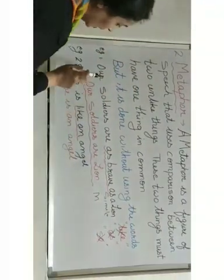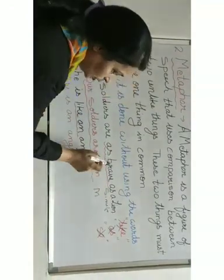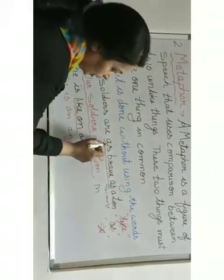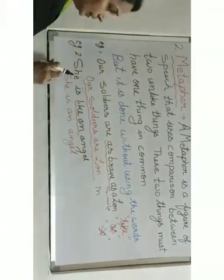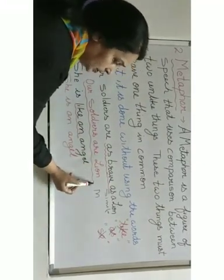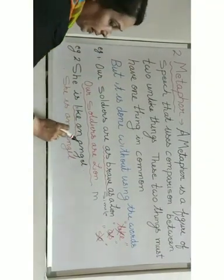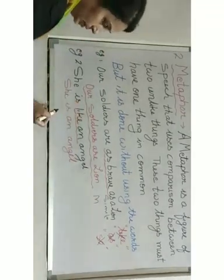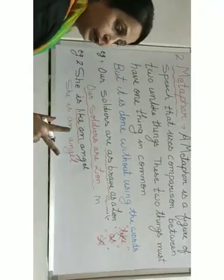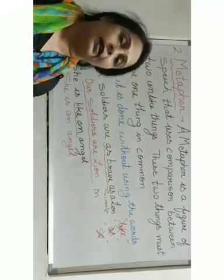Let us understand with examples. The simile 'our soldiers are as brave as a lion' becomes the metaphor 'our soldiers are lion' when we remove the comparison words. Similarly, 'she is like an angel' becomes 'she is an angel.' The comparison between two unlike things with one common quality, but without comparison words — that is a metaphor.